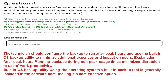The correct answers are B, configure the backup to run after peak hours, and D, use the built-in OS backup utility. Running backups during non-peak times minimizes disruption to users' work productivity. Using the operating system's built-in backup tool is generally included in the software cost, making it a cost-effective option. That's why the correct answers are B and D.